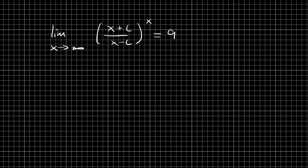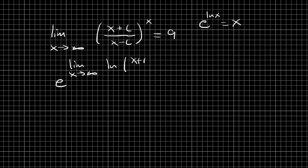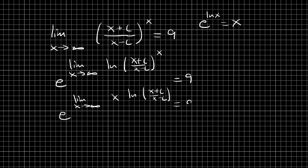The goal is to solve for c, and we're going to use the fact that e to the ln of x is equal to x. Applying that to the left side, we have e to the limit as x approaches infinity of ln of (x plus c over x minus c) raised to the x power. The natural log brings the exponent to the front, so that's e to the limit of x times ln of (x plus c over x minus c), and that equals 9.